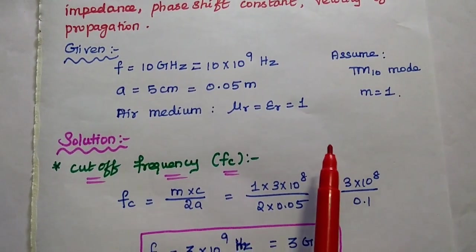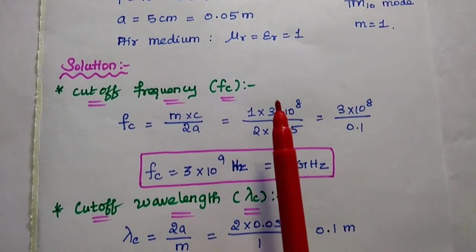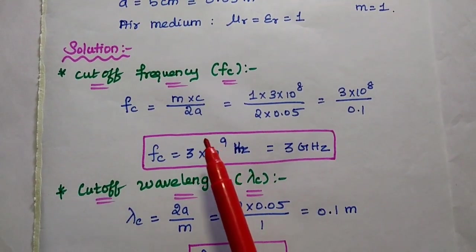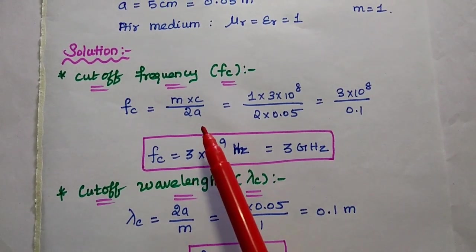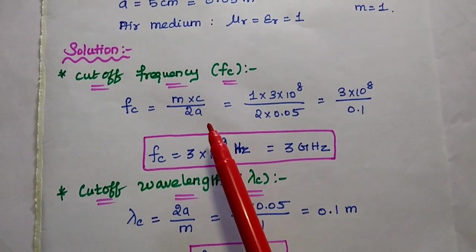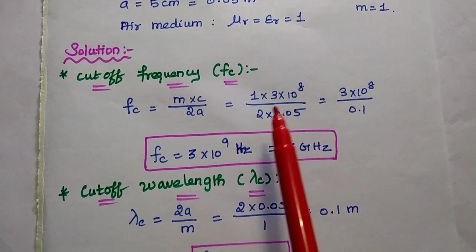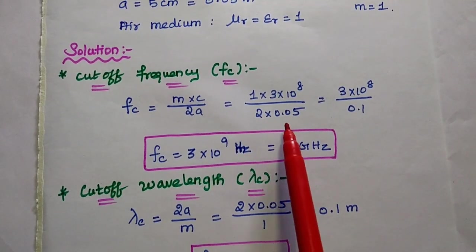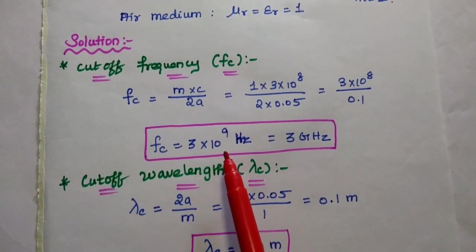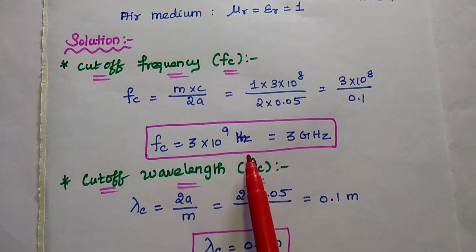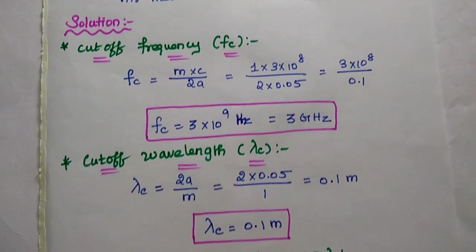Now we find the cutoff frequency, cutoff wavelength, and characteristics impedance. The cutoff frequency fc for air medium is m into c by 2a. Substituting m equals 1, c equals 3 into 10 to the power 8, and a equals 0.05: fc equals 1 into 3 into 10 to the power 8 divided by 2 into 0.05, giving 3 into 10 to the power 9 hertz, that is 3 gigahertz.